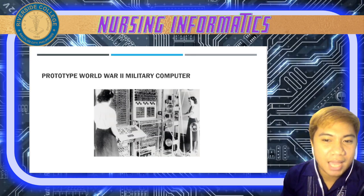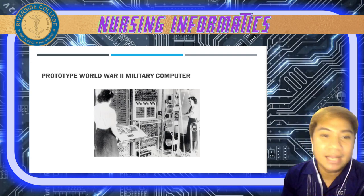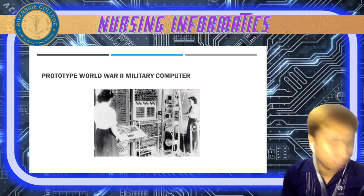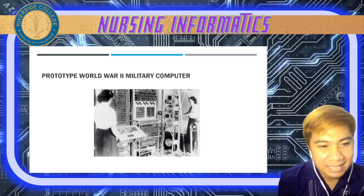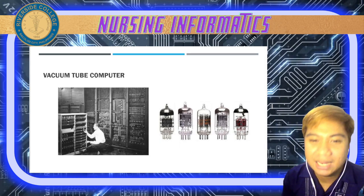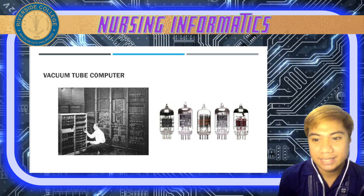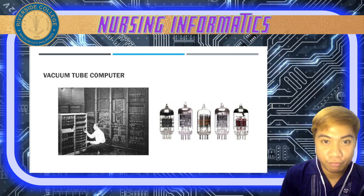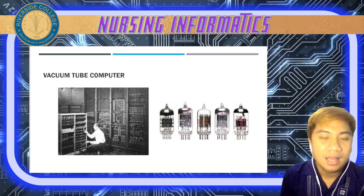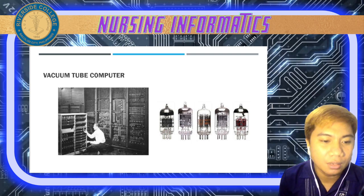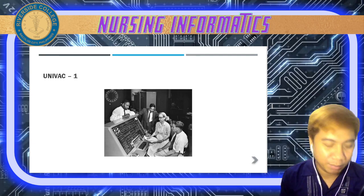As you can see, the prototype World War II military computer had many connected components but was just a single computer. The vacuum tube was called vacuum because it was contained in vacuum-sealed containers to avoid overheating. After the corporation acquired it, it became UNIVAC I, showing the gradual evolution of these machines.